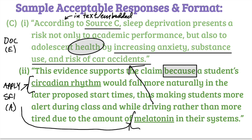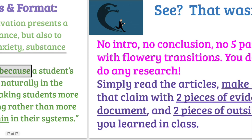To provide outside evidence and justify the claim: 'a student's circadian rhythm would fall more naturally in the later proposed start times, thus making students more alert during class and while driving, rather than more tired due to the amount of melatonin in their systems.' Here you're drawing from unit one on the brain — the pineal gland is responsible for releasing melatonin and regulating the circadian rhythm. Naturally, teenagers tend to fall asleep later in the evening and want to wake up later the next day, whereas older adults release melatonin earlier in the evening.